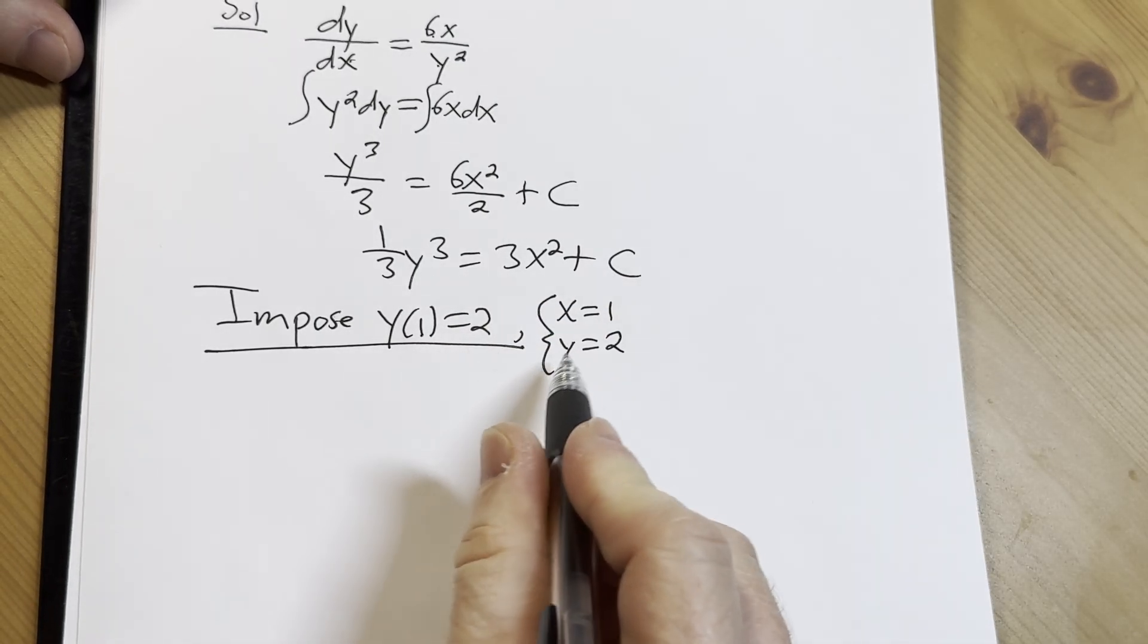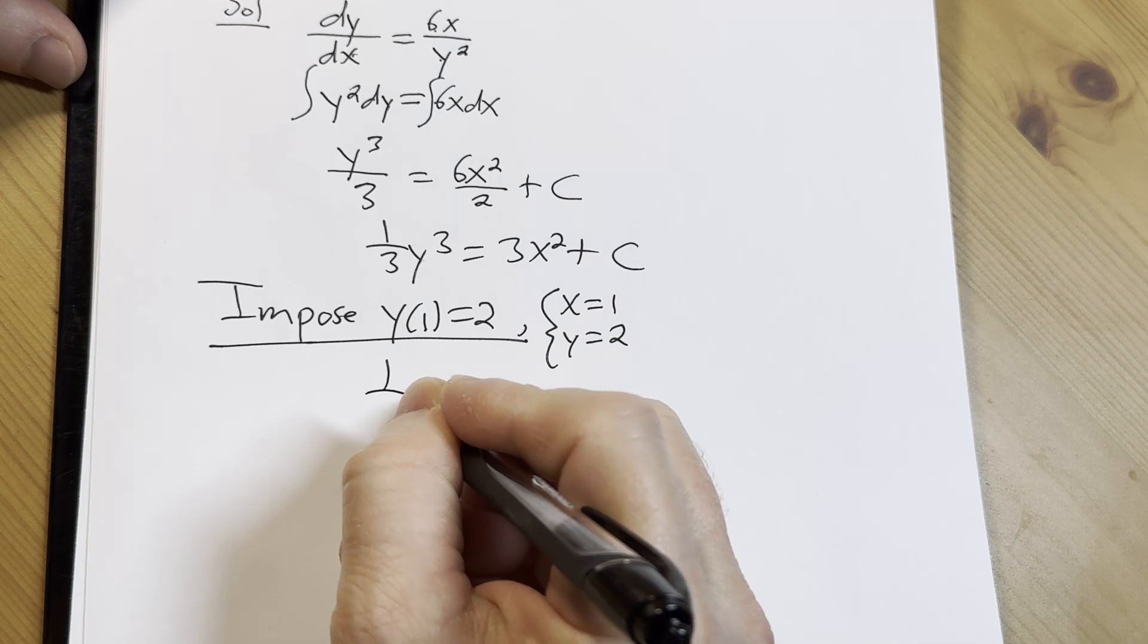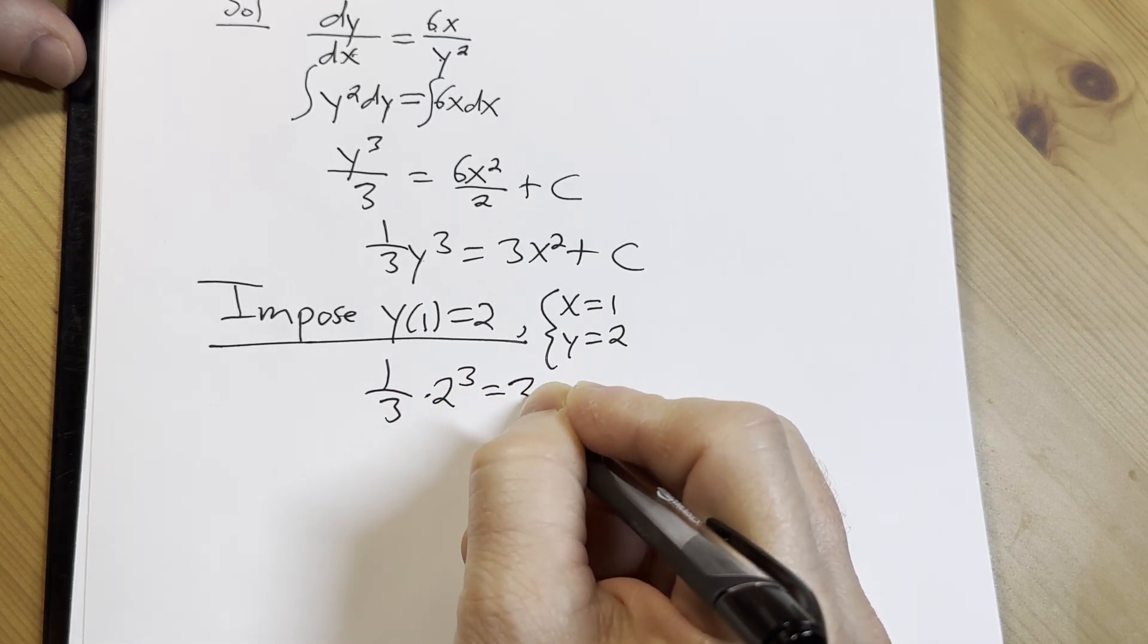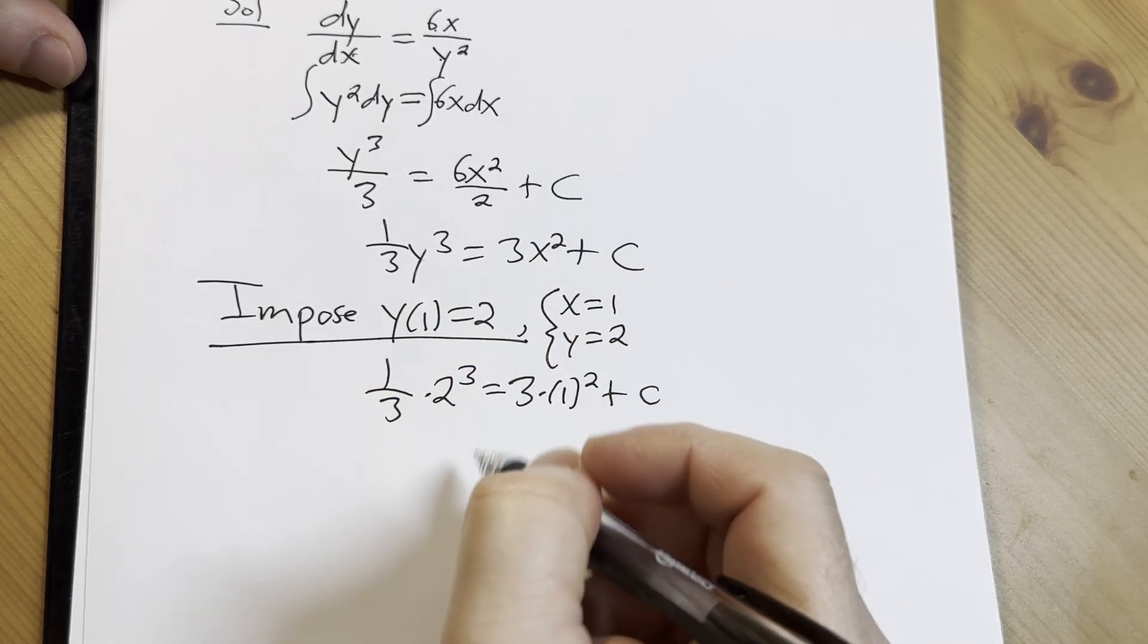That's what this means, right? y of 1 equals 2 means this. So y is 2, so we get 1 third times 2 cubed equals 3 times 1 squared plus C, because x is 1 and y is 2.